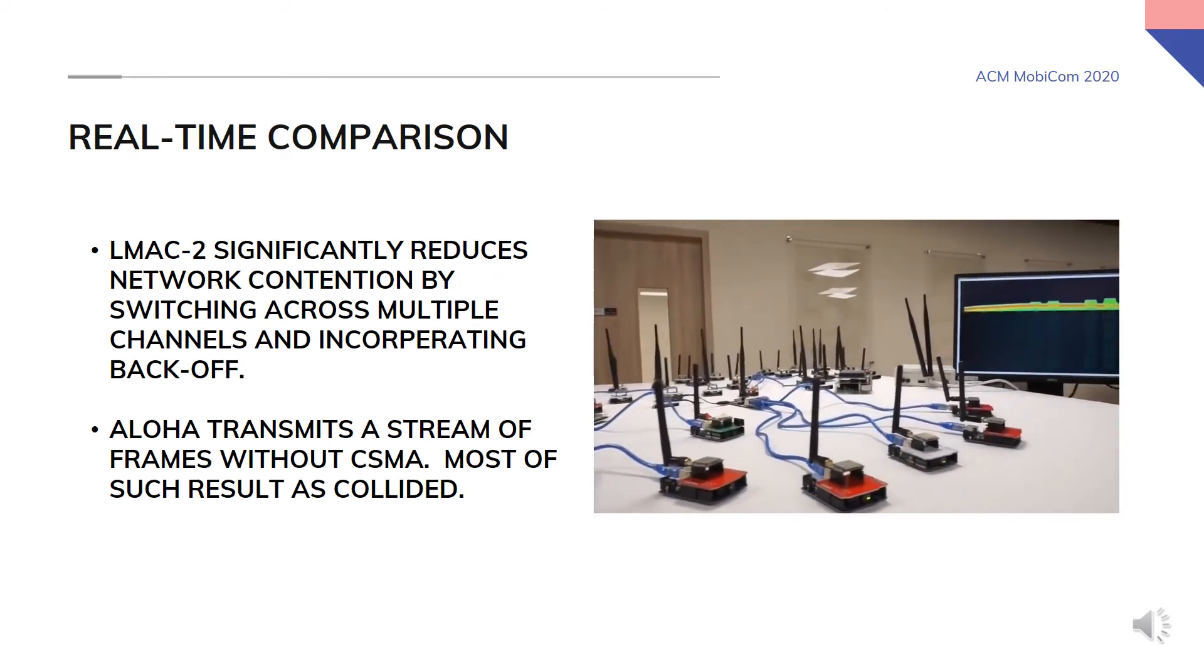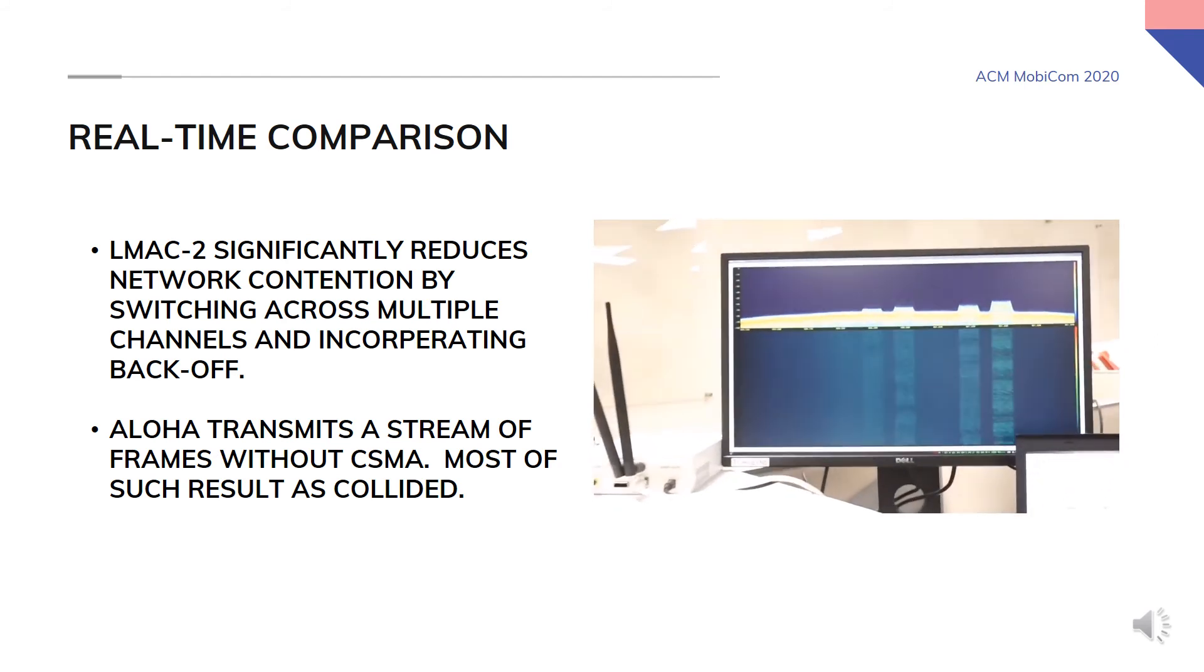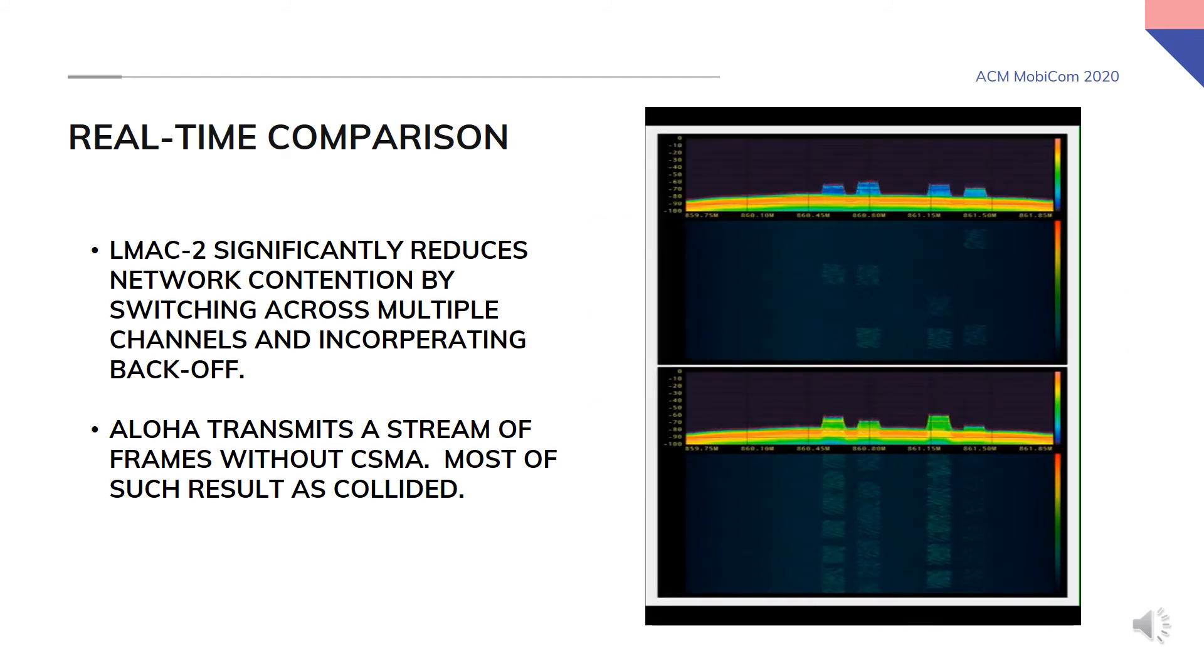We now present you two comparable spectrograms of LMAC-2 and Aloha. For this demo we utilize several LoRa nodes, a USRP N210 as a spectrum monitor, and emulate a highly contented environment. On the bottom you can see the spectrogram of Aloha and on the top you can see the spectrogram of LMAC-2. As you can see under Aloha nodes send out a stream of LoRa frames without checking the status of the channel merely to meet the demand. Most of such packets end up collided at the gateway.